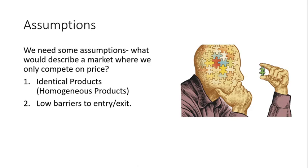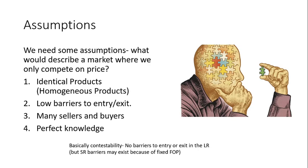The next assumption is low barriers to entry and exit — it's easy to come in and leave the market. There are many buyers and sellers. And we have perfect knowledge, which means customers know what your product is and what your competitors' prices are. There's no opportunity to stretch the truth. Essentially, this is contestability: there are no barriers to entry or exit in the long run. Short-run barriers may exist because of fixed factor production, but beyond that short-run period, as many firms can enter this market as they want to.